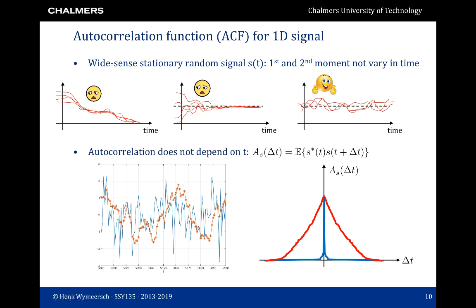We also recall from last lecture that it was useful to introduce the notion of wide-sense stationarity. A wide-sense stationary random signal is one for which the first and second moments do not vary in time. Of the three figures shown, the first cannot be wide-sense stationary because the mean does not stay constant; the second cannot because the variance changes over time. For the last one, both mean and variance appear constant, so it could be a candidate. In particular, the autocorrelation function does not depend on time — it only depends on how much time has elapsed, not at which time we consider it.